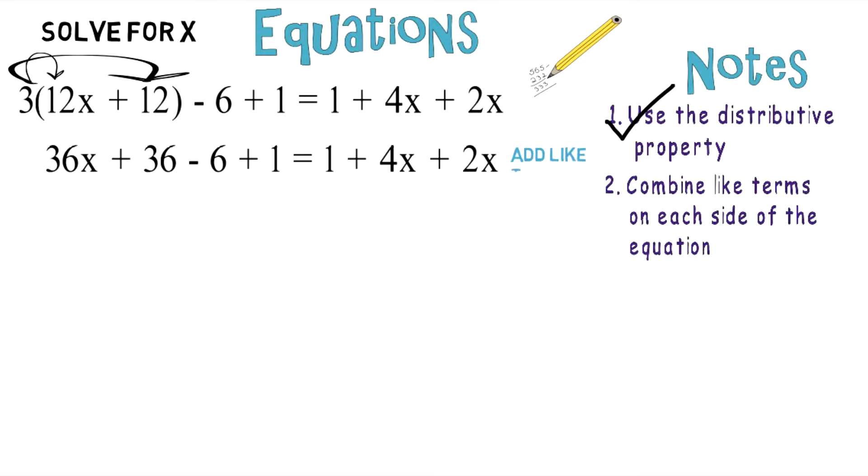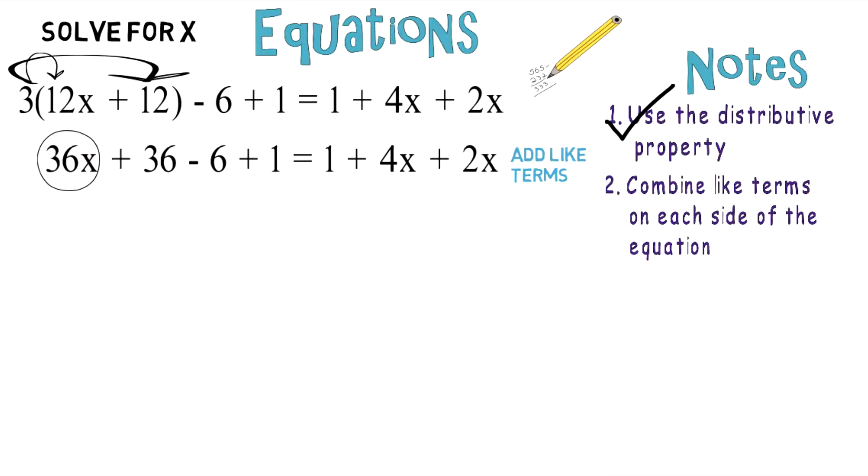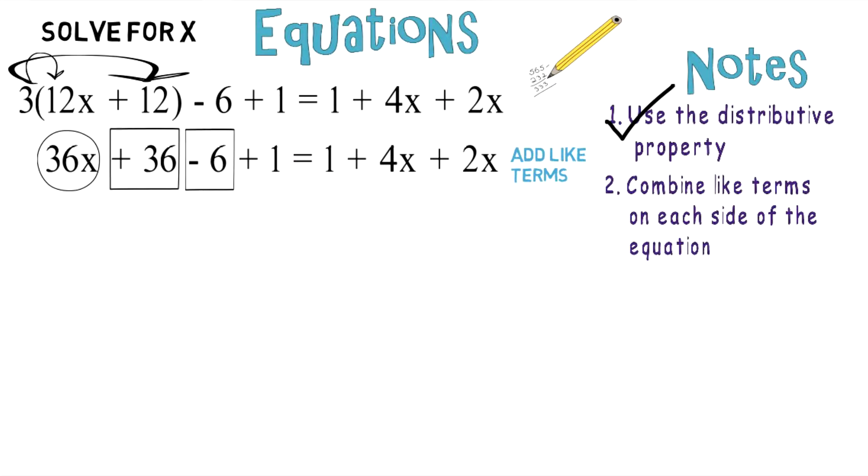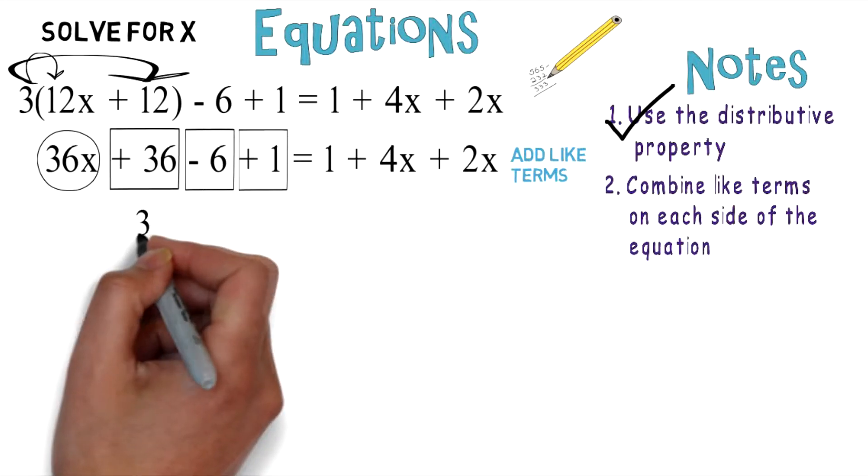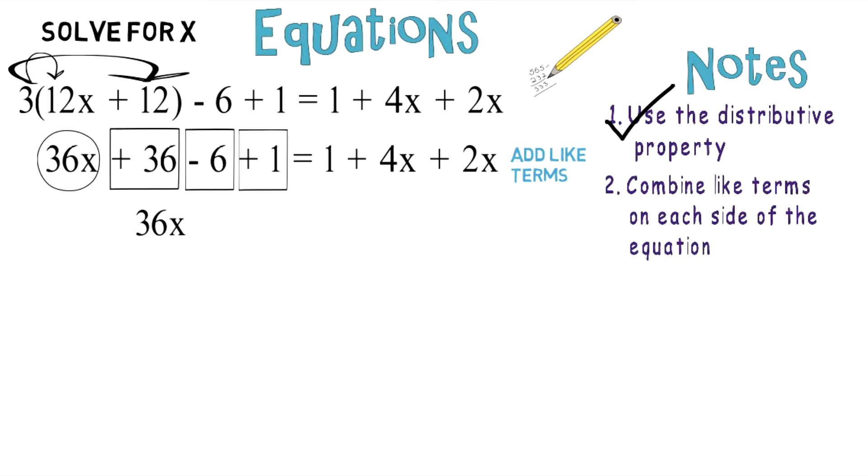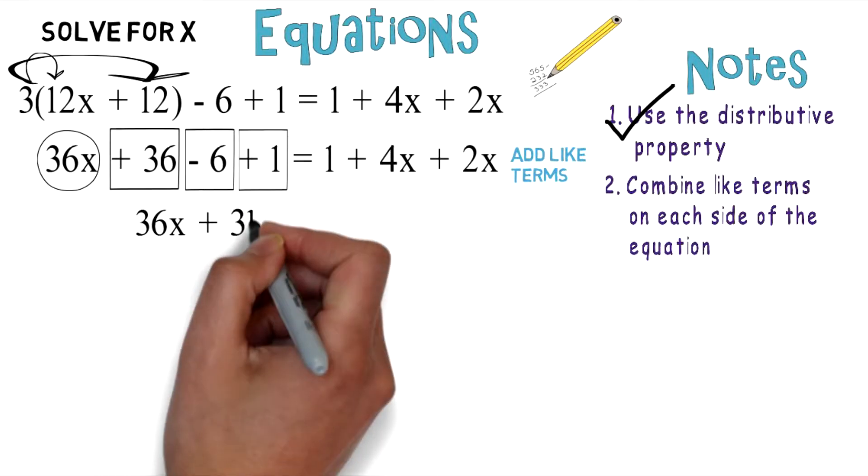You can take a look here and identify the like terms. You have 36x, plus 36 minus 6 and plus 1. The 36x gets dropped down, and 36 - 6 + 1 combine to give you 31, so you get 36x + 31.